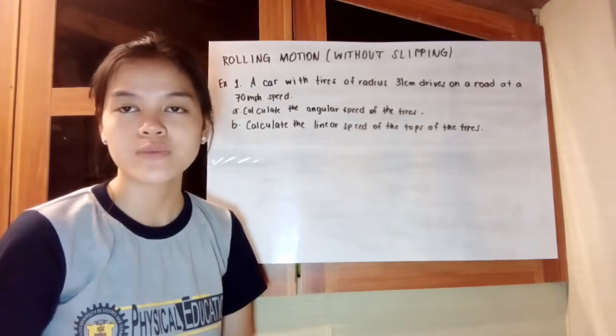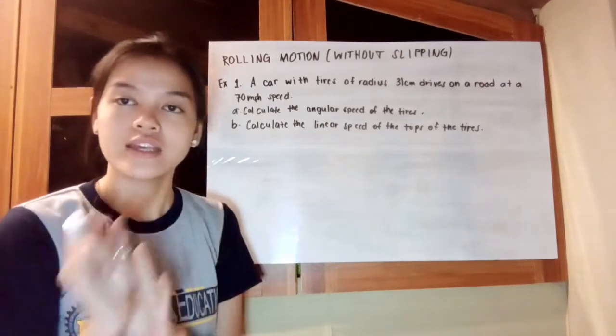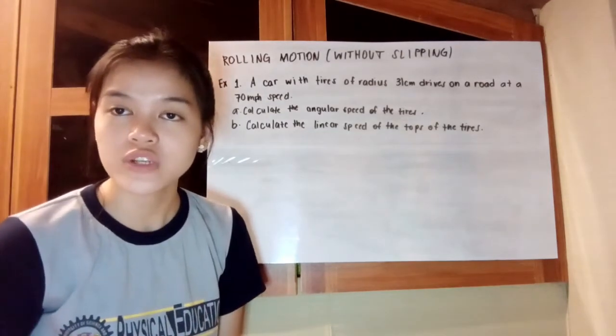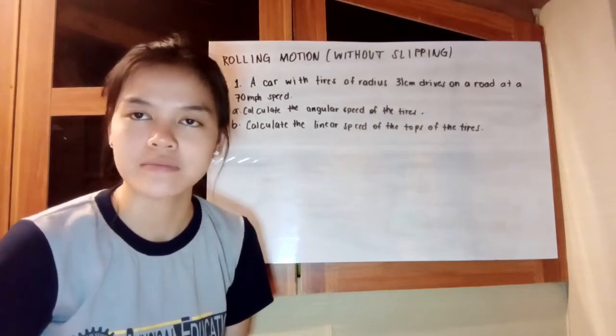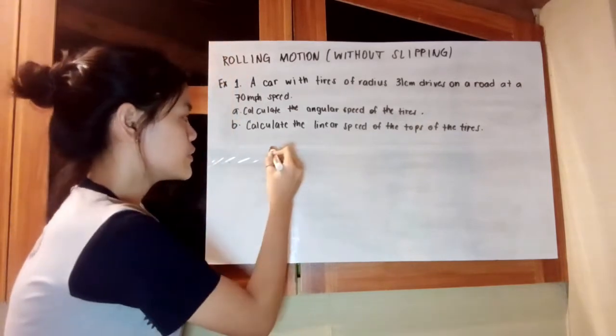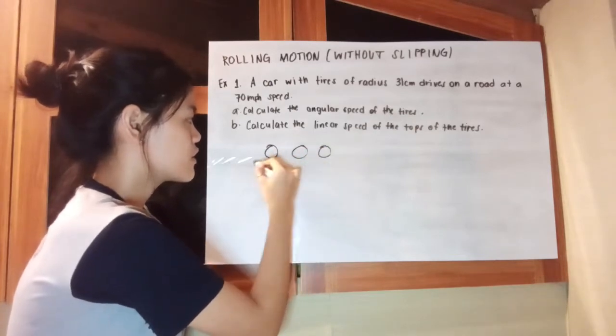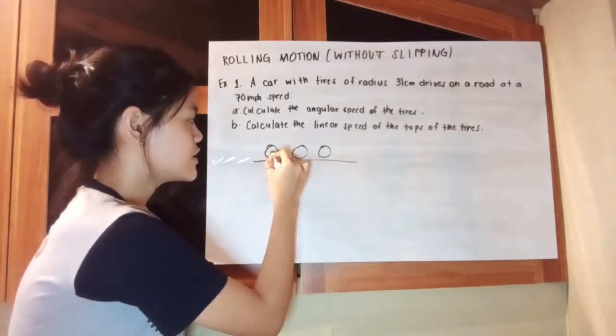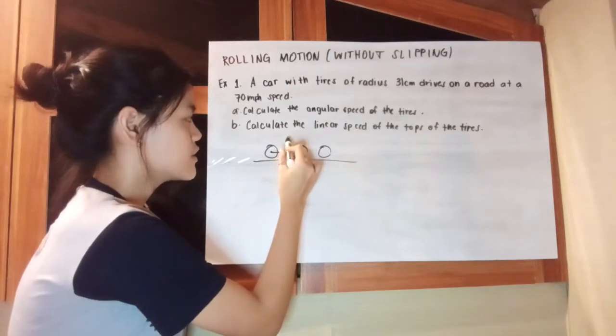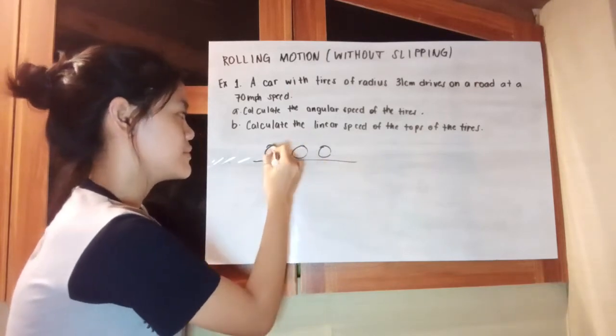A rolling motion is when an object is rotating and moving in a straight line trajectory at the same time. For example, this is the object that is moving in a straight line but is also rotating at the same time.